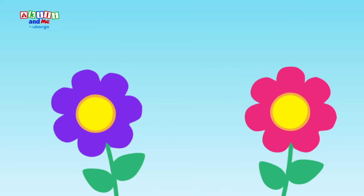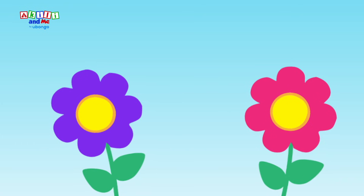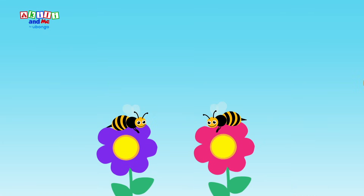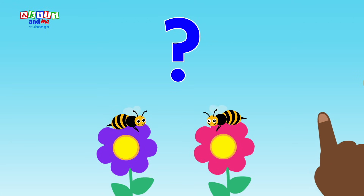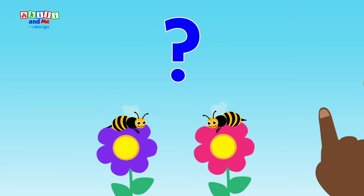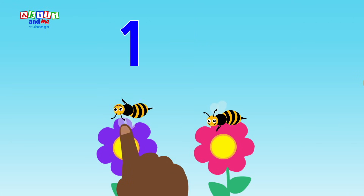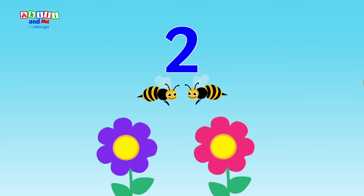Two flowers I can see, smelling oh so sweet. Each flower has one bee, one bee on each flower. How many bees are there? Let's count! One, two — two bees!